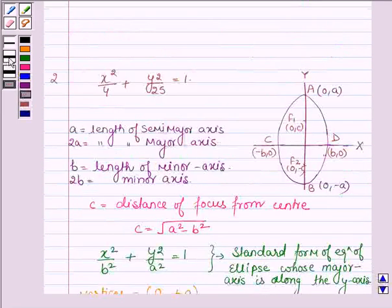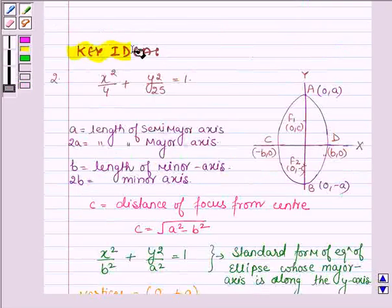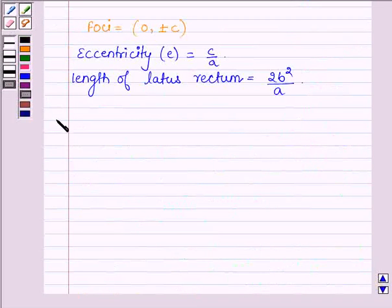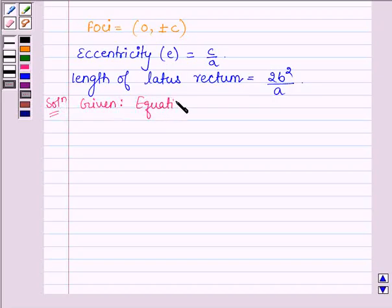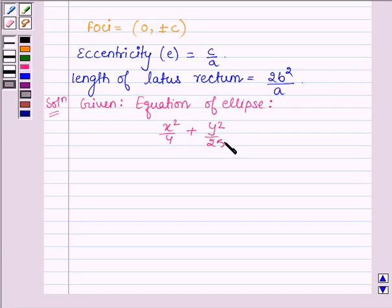So, with the help of these few formulas we are going to solve the above problem. Let us start with the solution. Here we are given the equation of the ellipse: x squared upon 4 plus y squared upon 25 is equal to 1, or it can be written as x squared upon 2 squared plus y squared upon 5 squared is equal to 1.